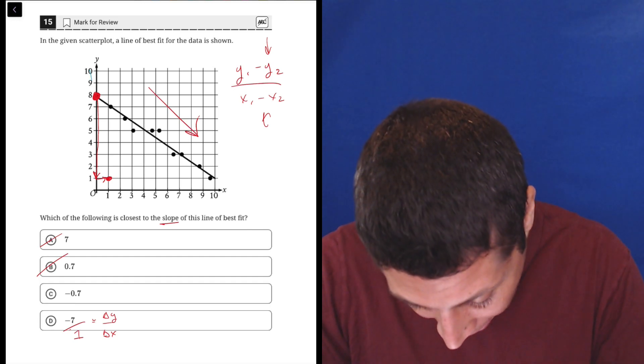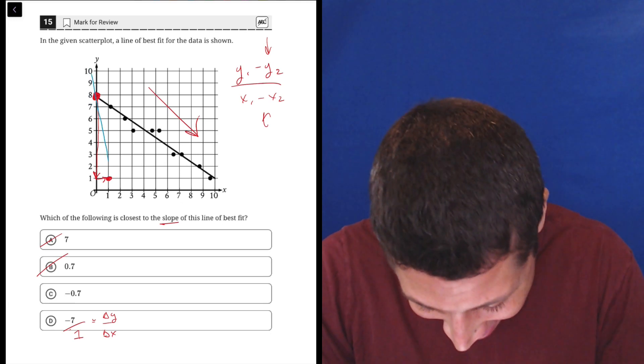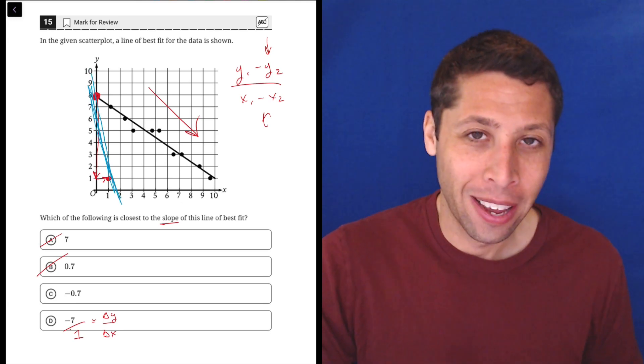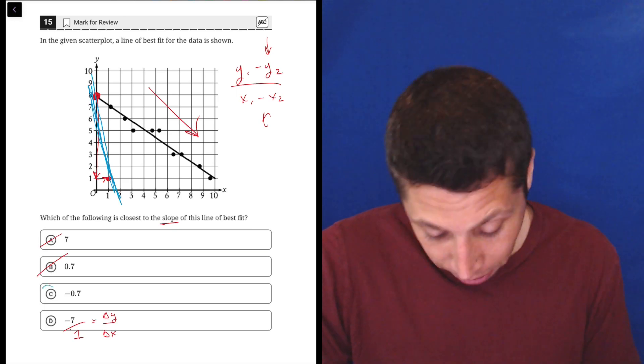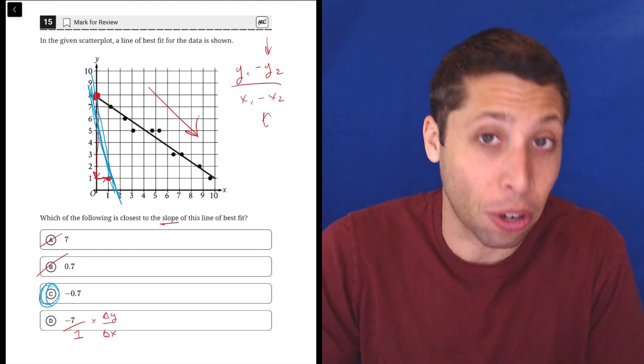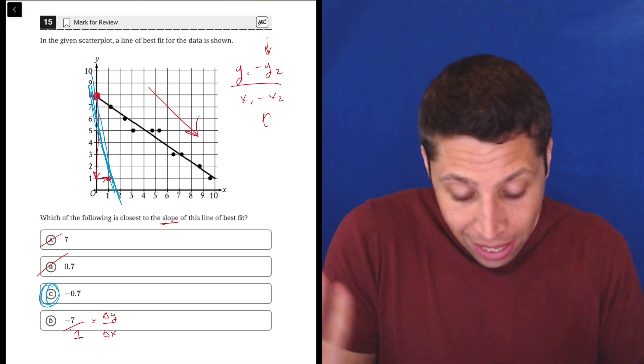Now does that look like the slope? No. If I connect those dots, this is much steeper. It would be here, something like this. That's a much, much steeper slope. So negative 7 over 1, it's just way off. I don't need to test out C. I've tested out the thing that was easier to think about because it didn't involve any decimals, and it's right.